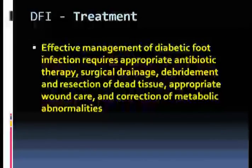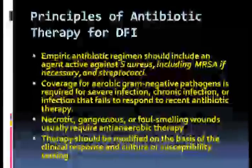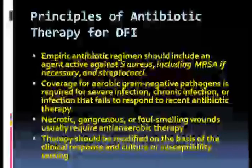Effective management of diabetic foot infection requires appropriate antibiotic therapy, surgical drainage, debridement and resection of dead tissue, appropriate wound care, and correction of metabolic abnormalities. Empiric antibiotic regimen should include an agent active against Staph aureus — including MRSA if necessary — and streptococci. Coverage for aerobic gram-negative pathogens is required for severe infections, chronic infections, or infections that fail to respond to recent antibiotic therapy. Necrotic, gangrenous, or foul-smelling wounds usually require anti-anaerobic therapy. Therapy should be modified based on clinical response and culture or susceptibility testing.